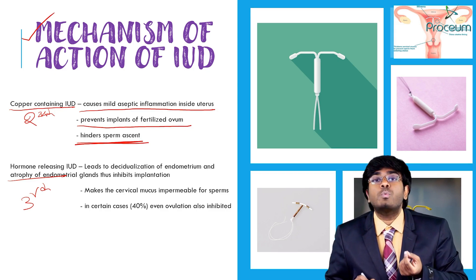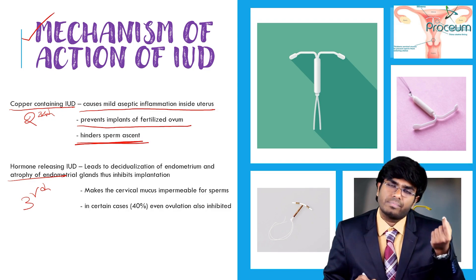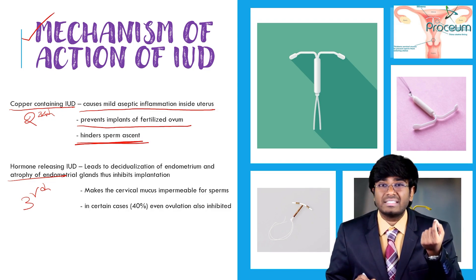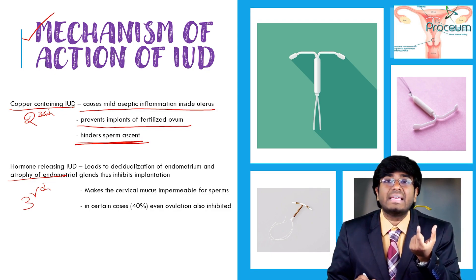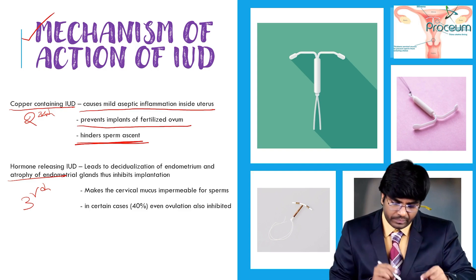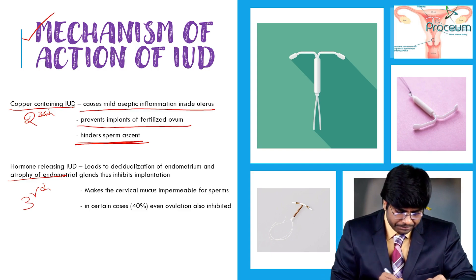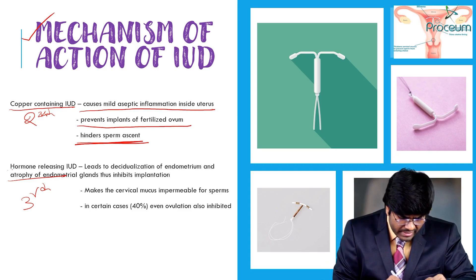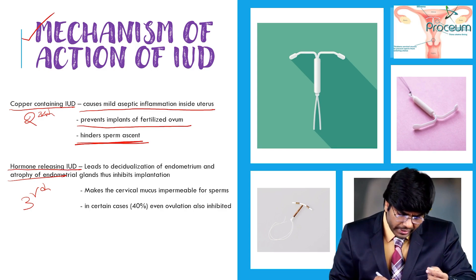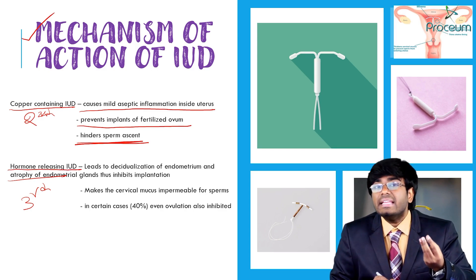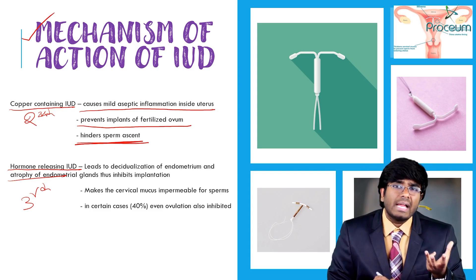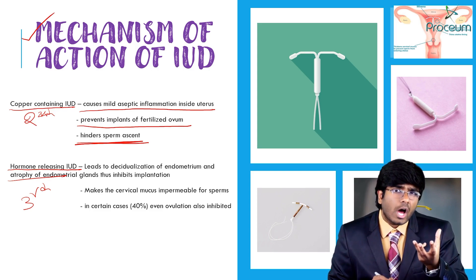Additionally, copper IUDs can hinder the ascent of sperm — they won't allow sperm to move toward the fallopian tubes and the ovum, because of the mechanical obstruction created by the IUD.